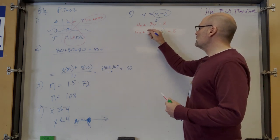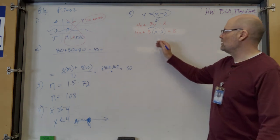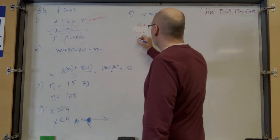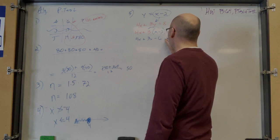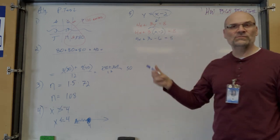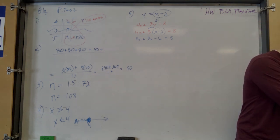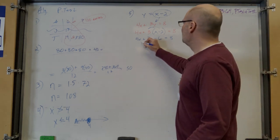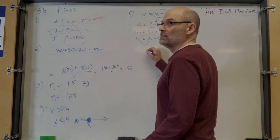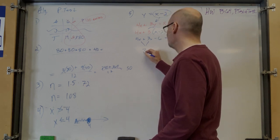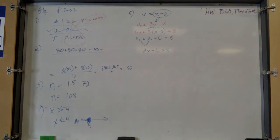Now simplify: get rid of parentheses by distributing the 3. So 4x plus 3x minus 6 equals 8. Now combine like terms on the same side: 4x plus 3x is 7x, so 7x minus 6 equals 8.